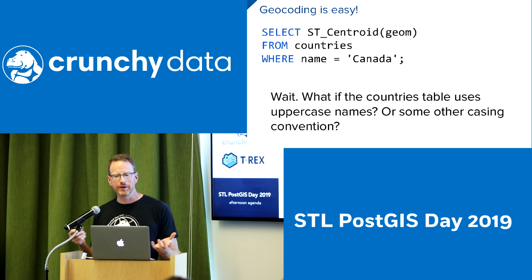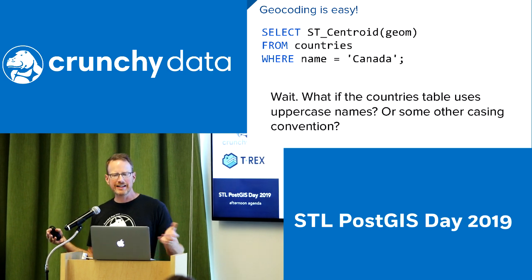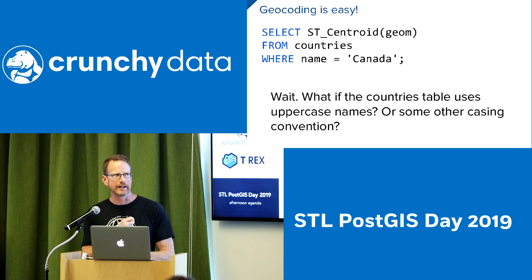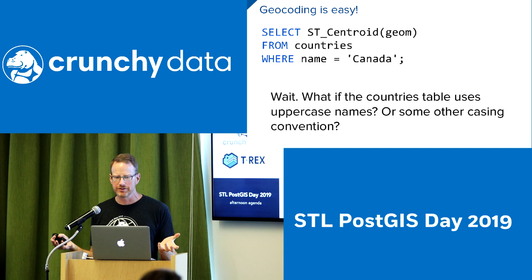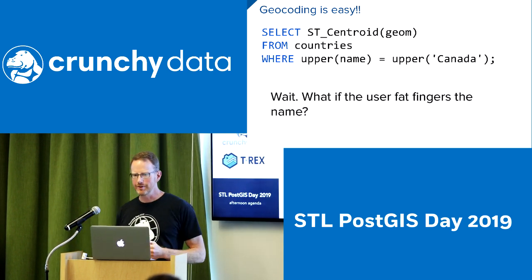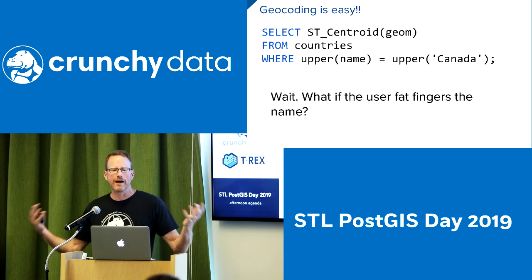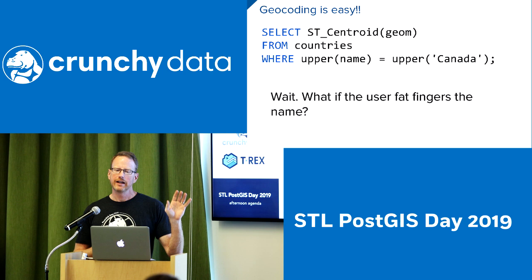Geocoding is easy if you restrict the domain. So let's say I have a table of countries and I want to find the location for any given string — just get the centroid of the geometry from countries where the name is Canada. But what if my data table uses a different convention, like all uppercase names? No problem — I'll search uppercase of the column versus uppercase of the user input, add a functional index on upper, and they'll always match.